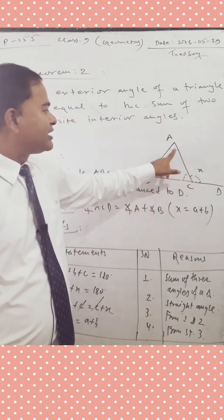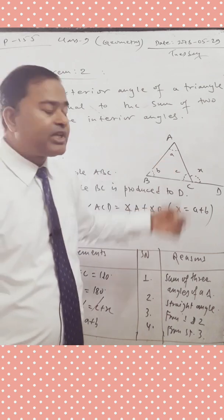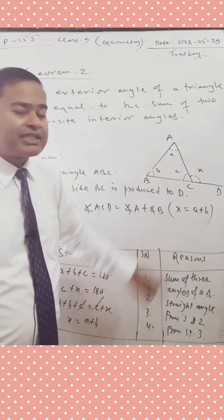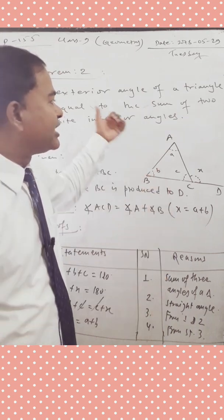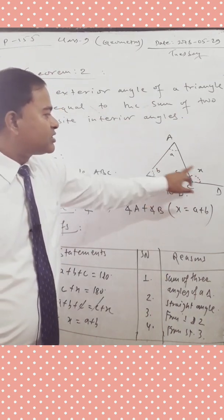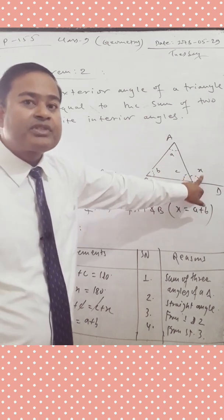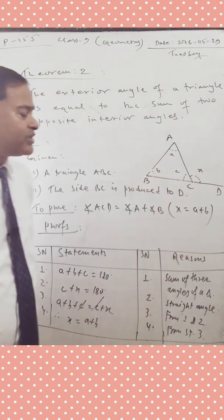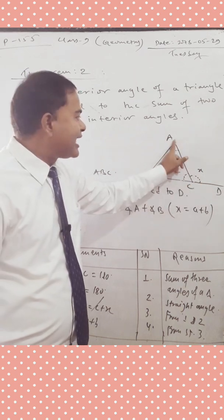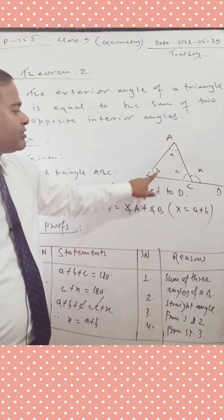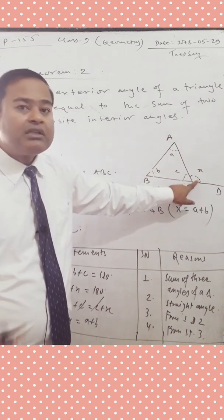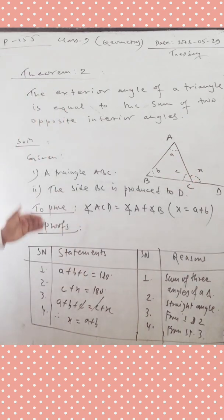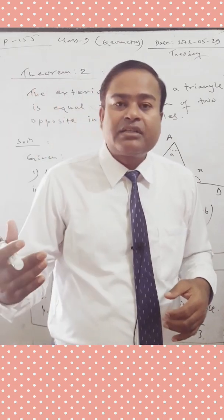To prove: angle ACD is equal to angle A plus angle B. In order to prove this easily, we suppose the exterior angle as X and the interior angles of the triangle as A, B, and C. So we have to prove that X equals A plus B, meaning the exterior angle ACD equals the sum of the two opposite interior angles A and B.